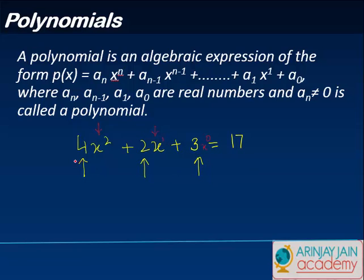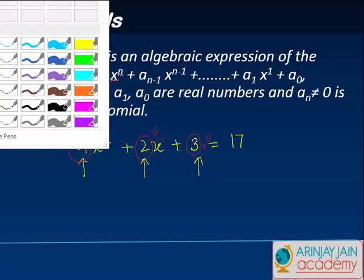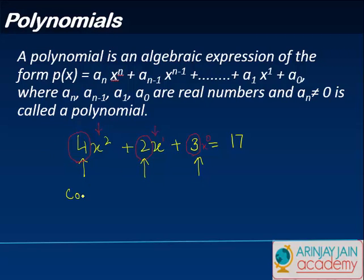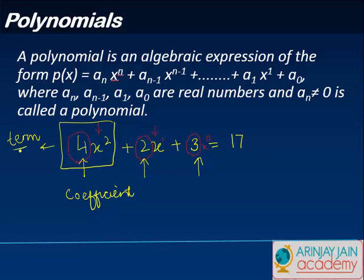The numbers which are the real numbers are known as the coefficient, and this entire thing taken together is known as a term of a polynomial. But the important question is what a polynomial is by itself.